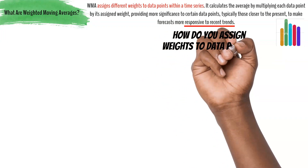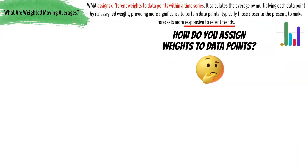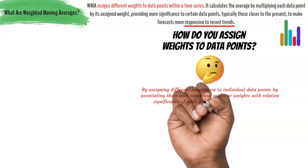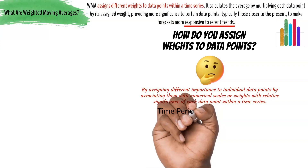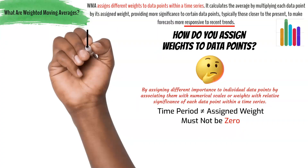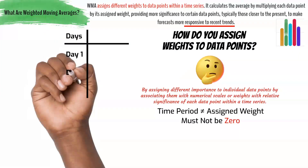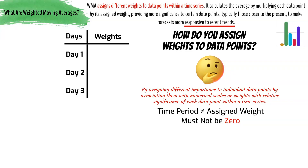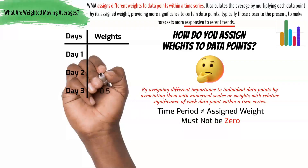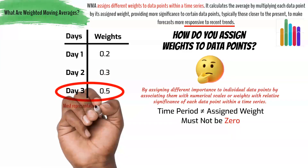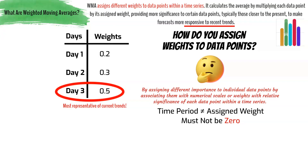How do we assign different weights to each data point? When assigning weights for a weighted moving average, the idea is to give each data point a different level of importance in the calculation. The sum of these weights does not need to equal the length of the time period, but it must be non-zero. One common way is to give more weight to the most recent data. For example, you could use weights of 0.5, 0.3, and 0.2, with the highest weight given to the most recent day, as recent data is likely most representative of the current trend.